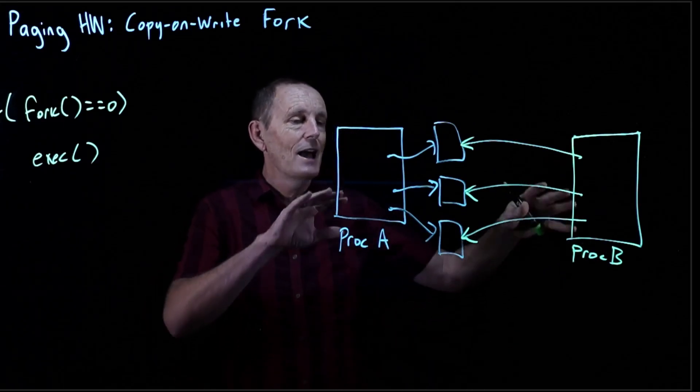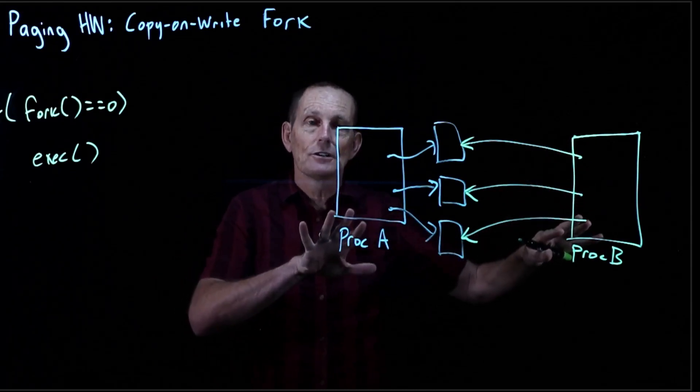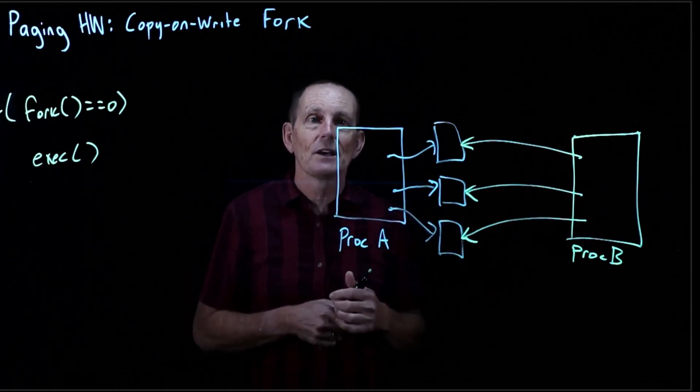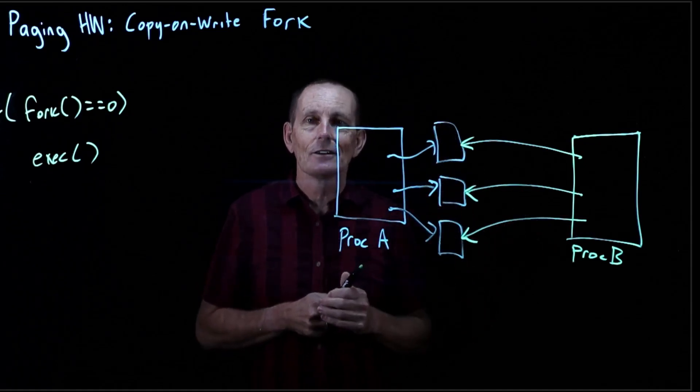So imagine we get these two processes, and now they can both be running along. They have different values of registers, right, because those registers get swapped out in a context switch.